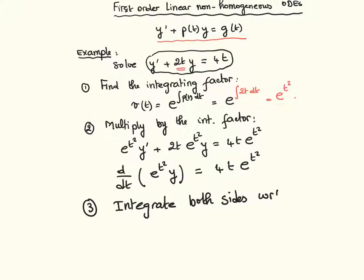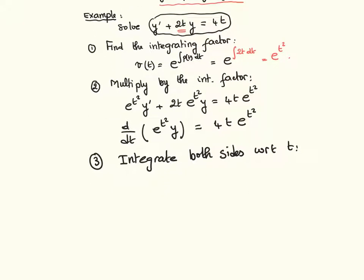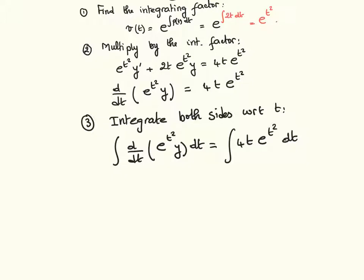So integrate both sides. And the integration, of course, with respect to the variable t. So this will become d over dt of e to the t squared y dt equal to the integral of 4t e to the t squared dt. Of course, here we are integrating the derivative of e to the t squared y. So we'll just get e to the t squared y. On the other side, well, we can easily show that this integral is 2 e to the t squared plus a constant c, like this.